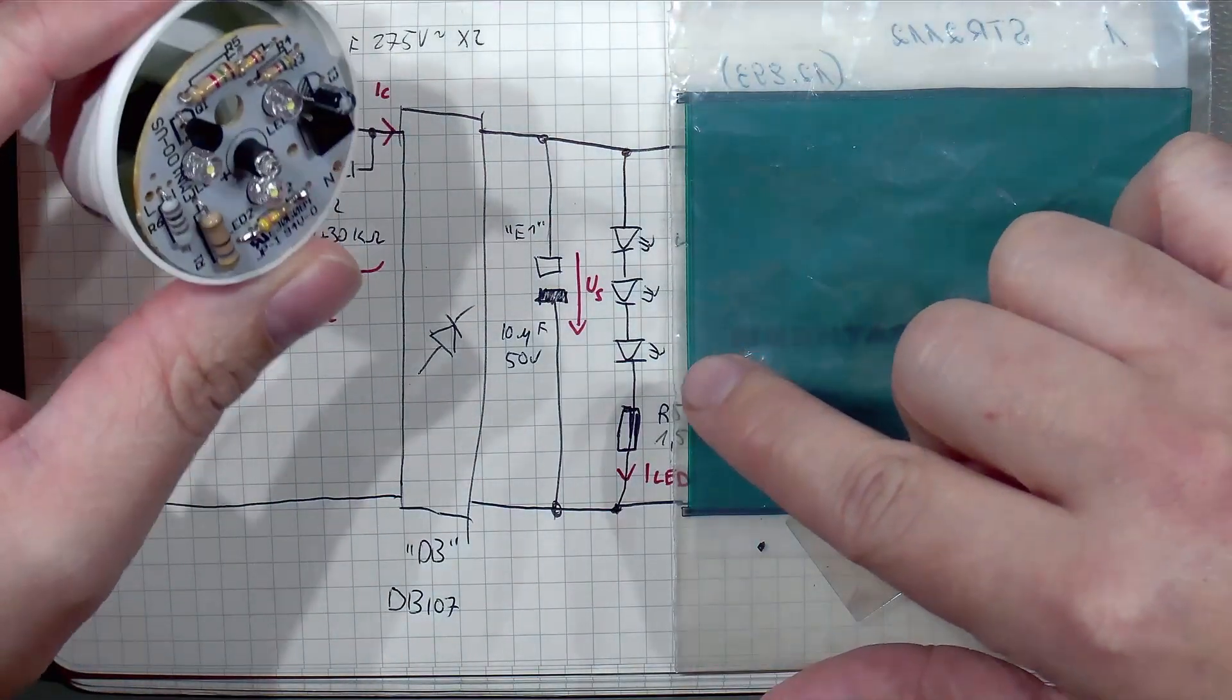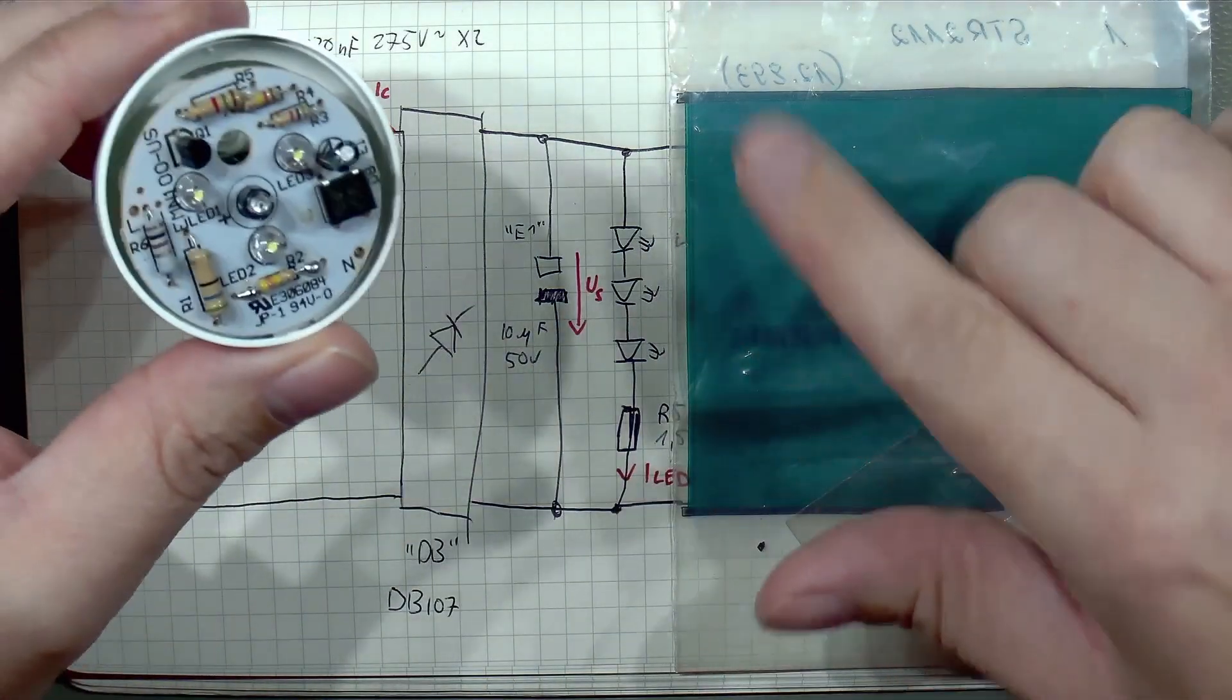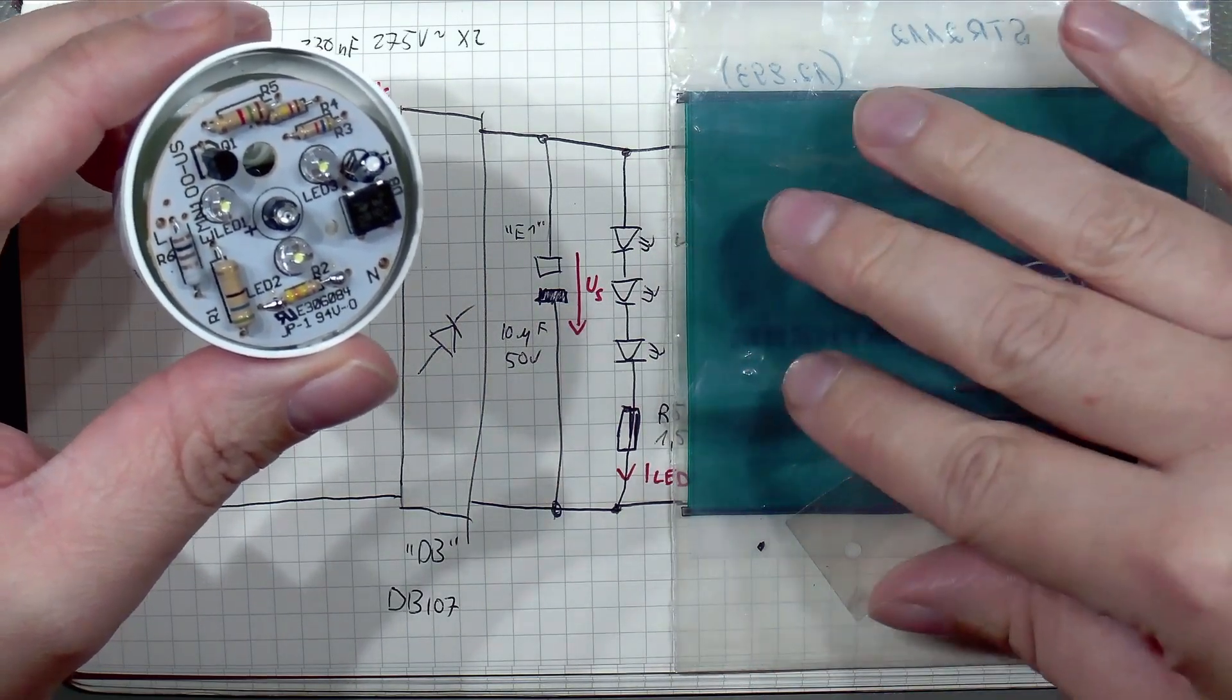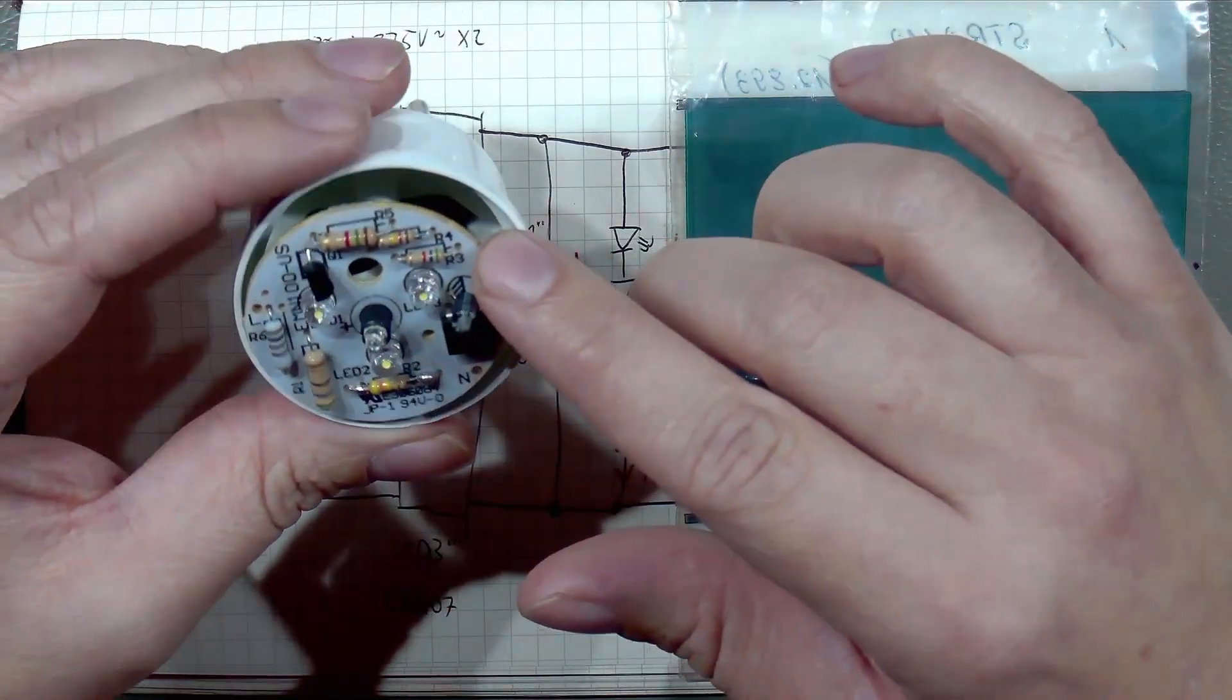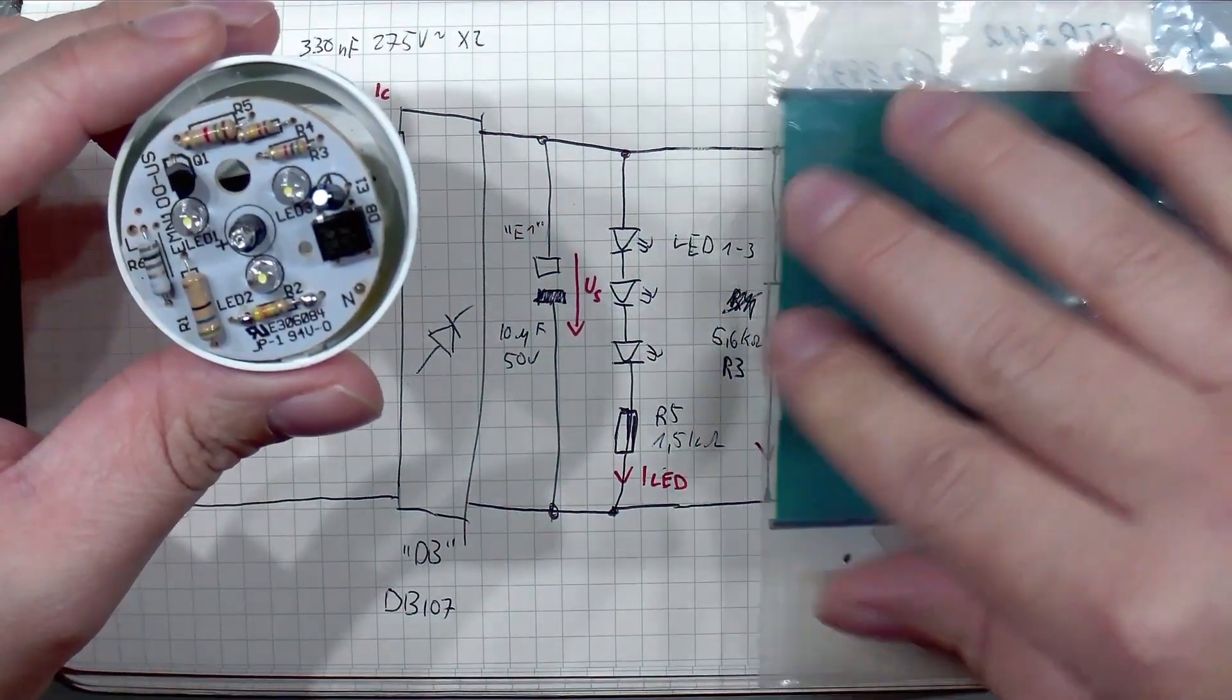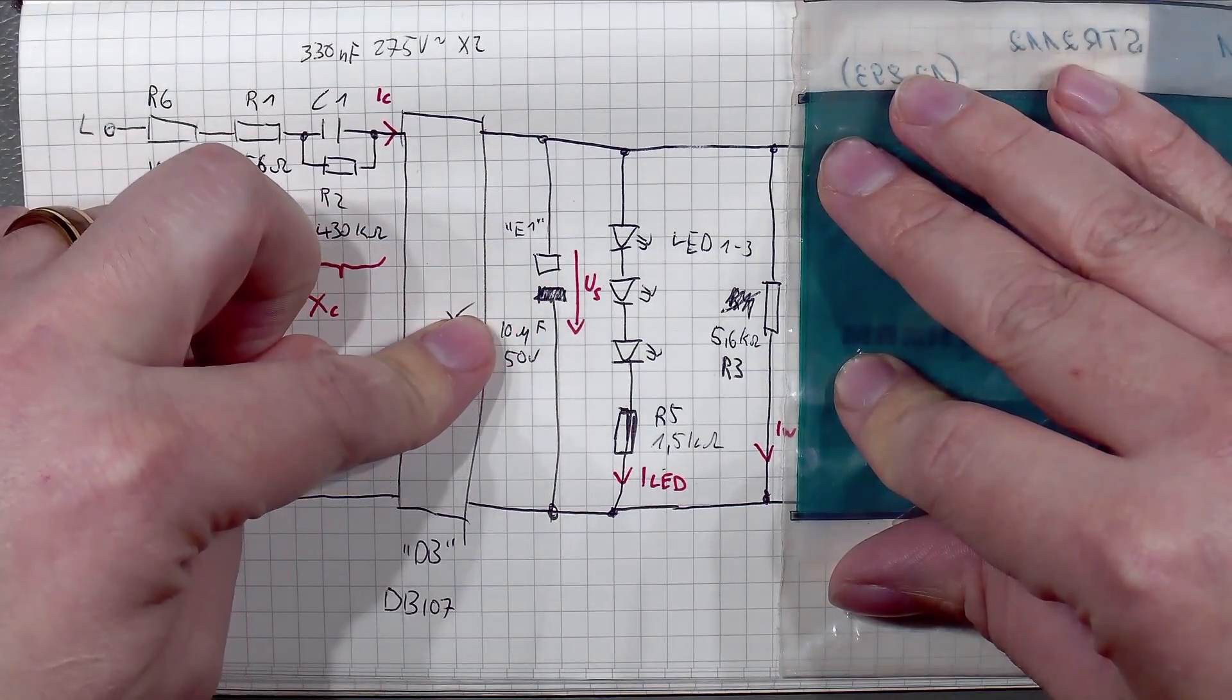But you might notice one oddity here. This thing turns on when it gets dark, so where is the transistor here? Well, the transistor is doing something very interesting.